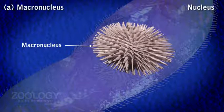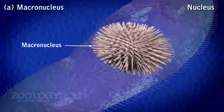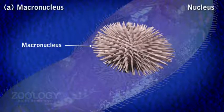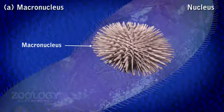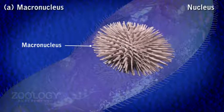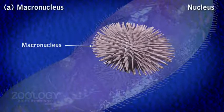The macronucleus is the somatic or vegetative nucleus and controls the metabolic activities of the cell. It is derived from the micronucleus during reproductive processes.